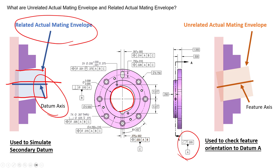The related actual mating envelope is utilized to simulate secondary or tertiary datums. In this scenario, it's being utilized to simulate the secondary datum.